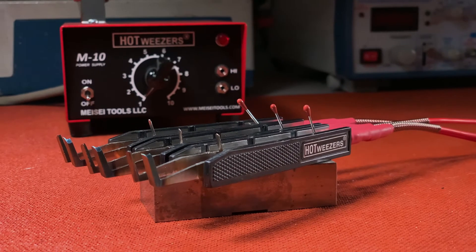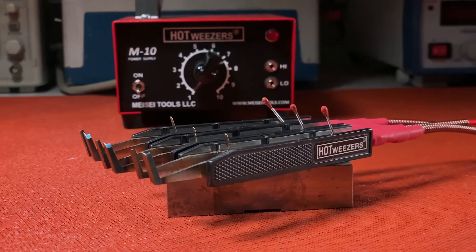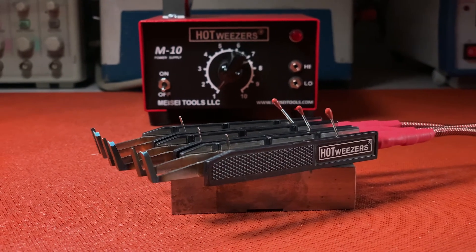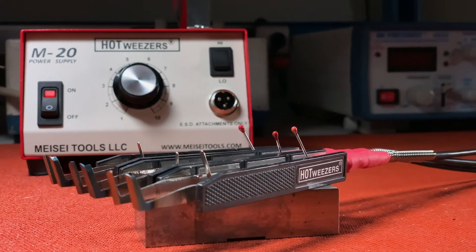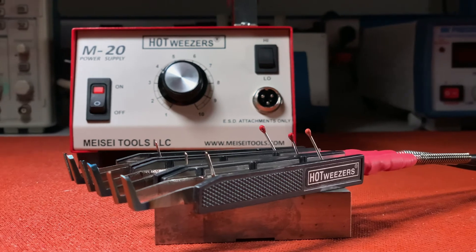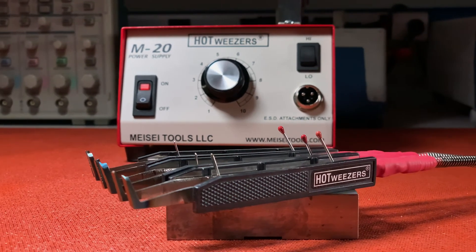4 series hot tweezers can achieve tip temperatures from 250 degrees Fahrenheit to 1400 degrees Fahrenheit. 7 series can achieve tip temperatures from 540 degrees Fahrenheit to 1850 degrees Fahrenheit.